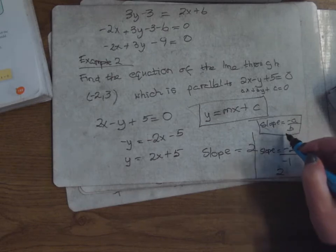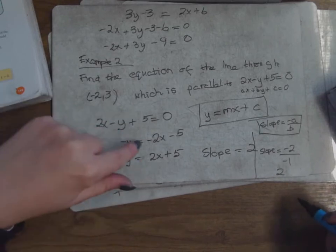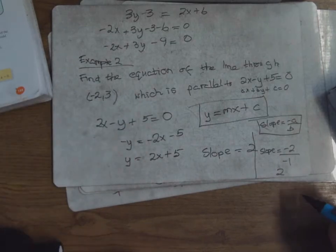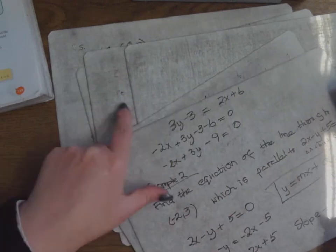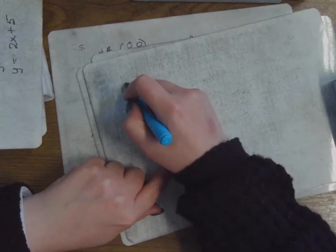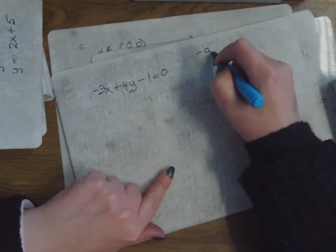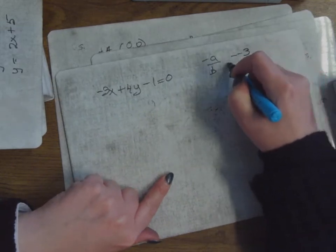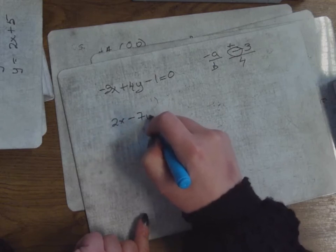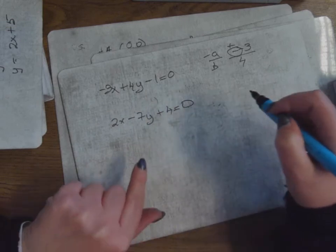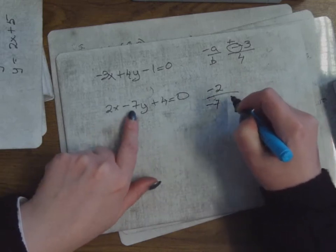The slope is −a/b — that formula is not in the log tables, so you need to remember it. For example: if I had −3x + 4y − 1 = 0, the slope is −(−3)/4 = +3/4. If I had 2x − 7y + 4 = 0, the slope would be −2/(−7) = +2/7. It's a very handy formula. Without it, you'd have to rearrange: −7y = −2x − 4, then divide everything by −7 to get slope = 2/7. There isn't much in it, but it's handy.